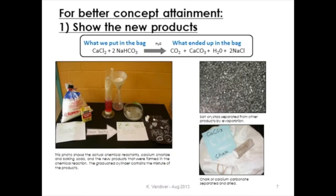One way we can talk about new products is by showing them. This is what we do at the Edgerton Center. We have calcium chloride in the bag as well as baking soda. We show the products, which include the gas that came off as CO2, the precipitant as chalk — students have tested it out. We can also identify by its new properties this NaCl, which we can now crystallize. So identifying the products is one of the things you can do.